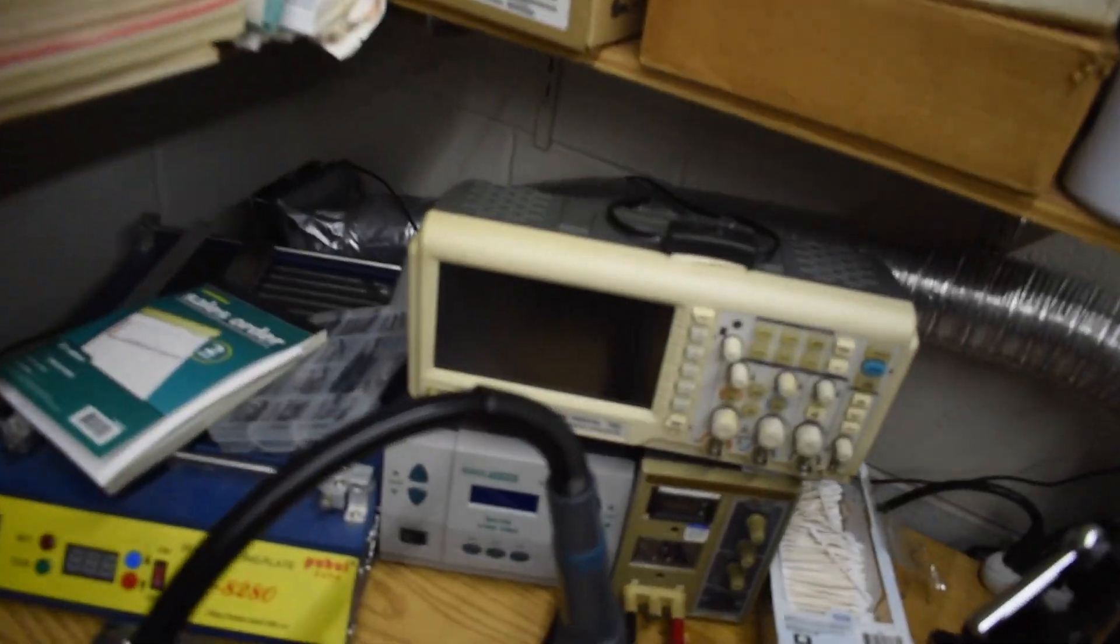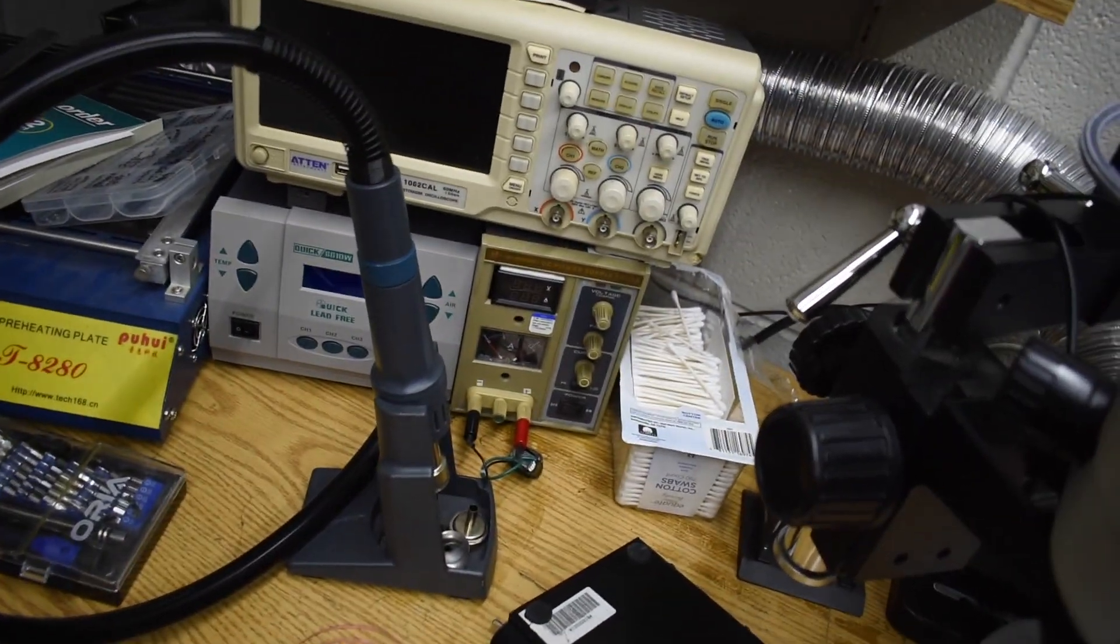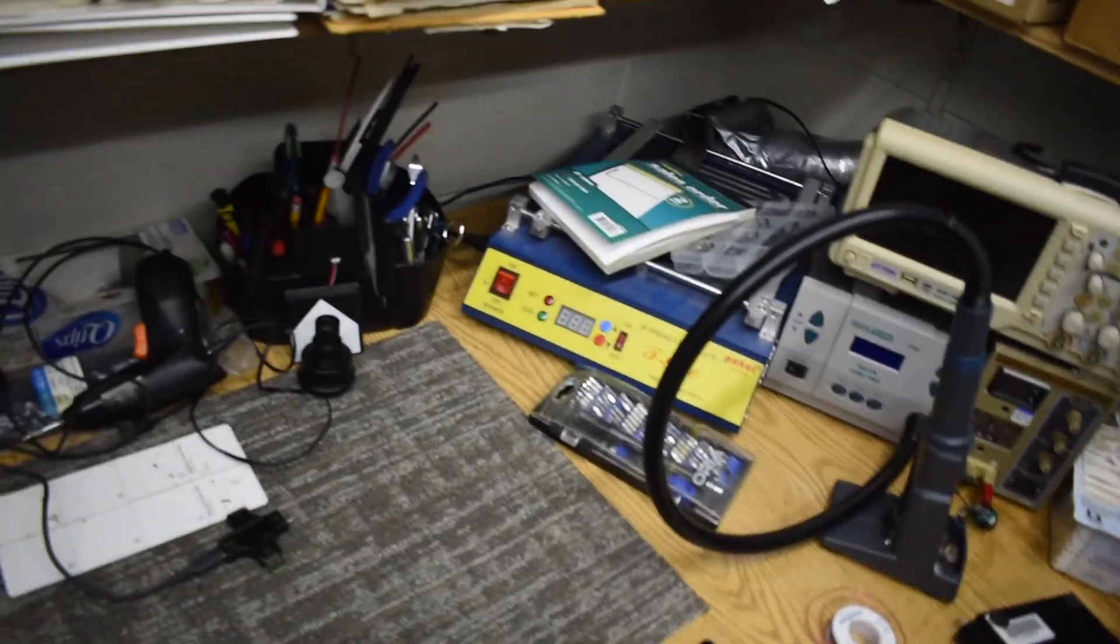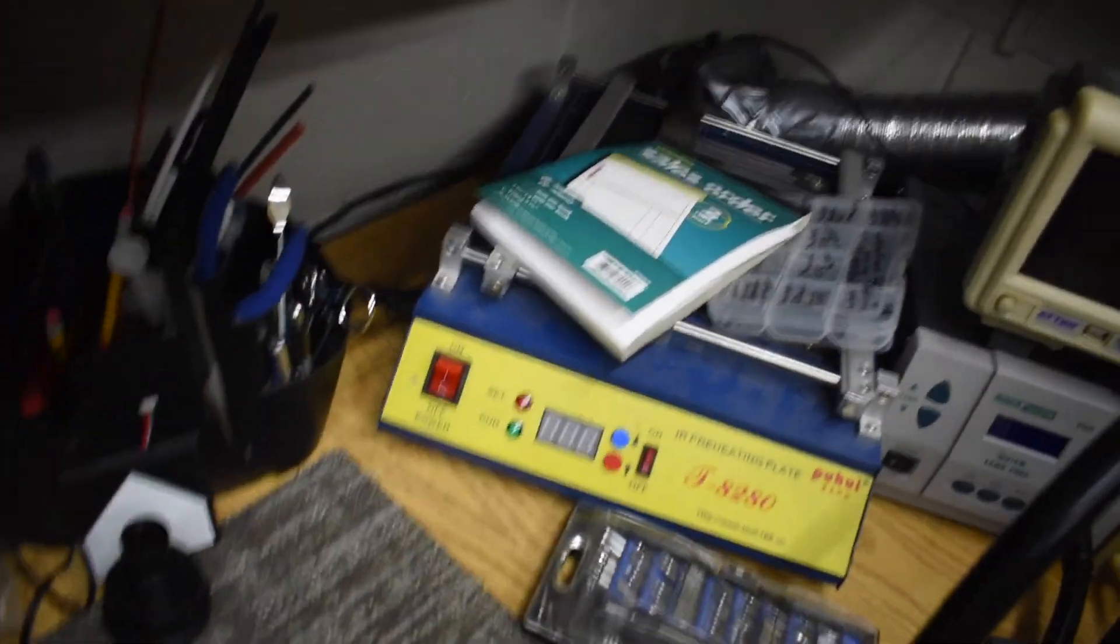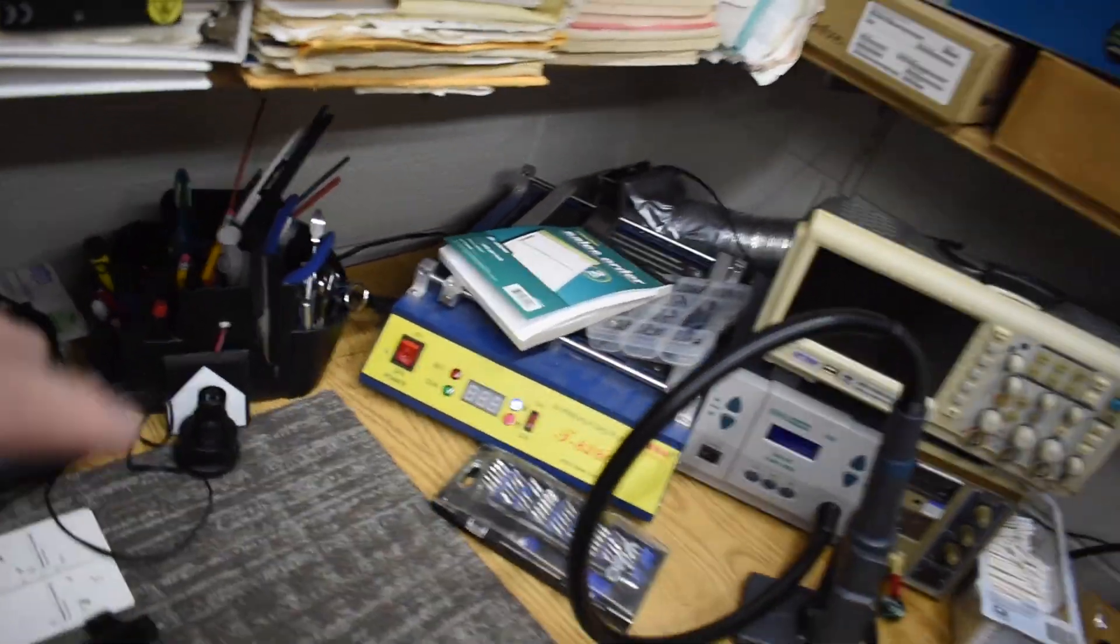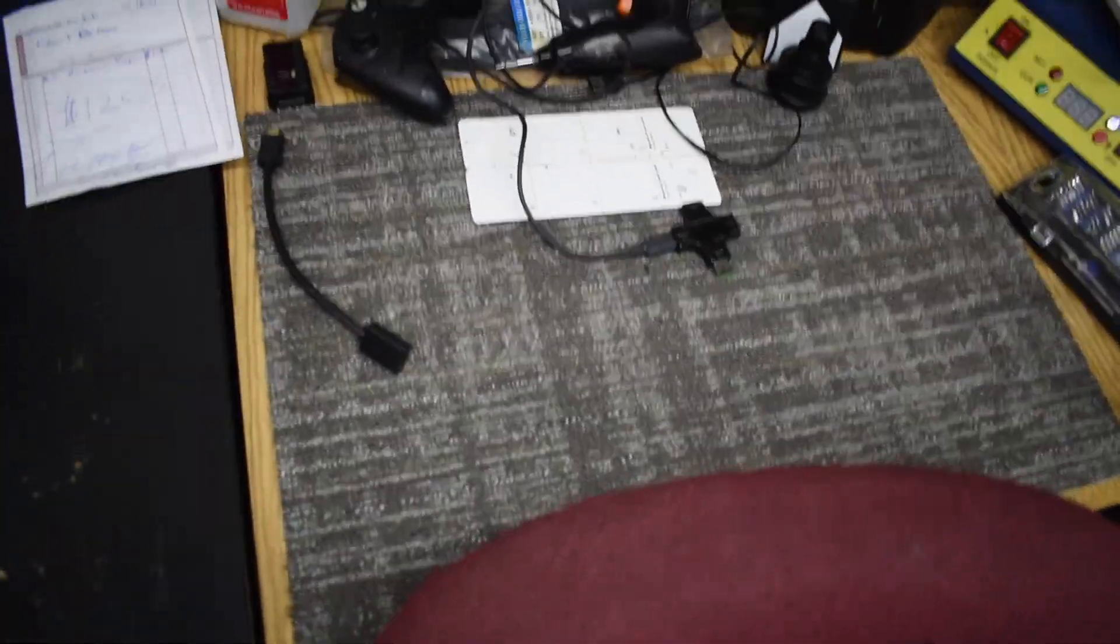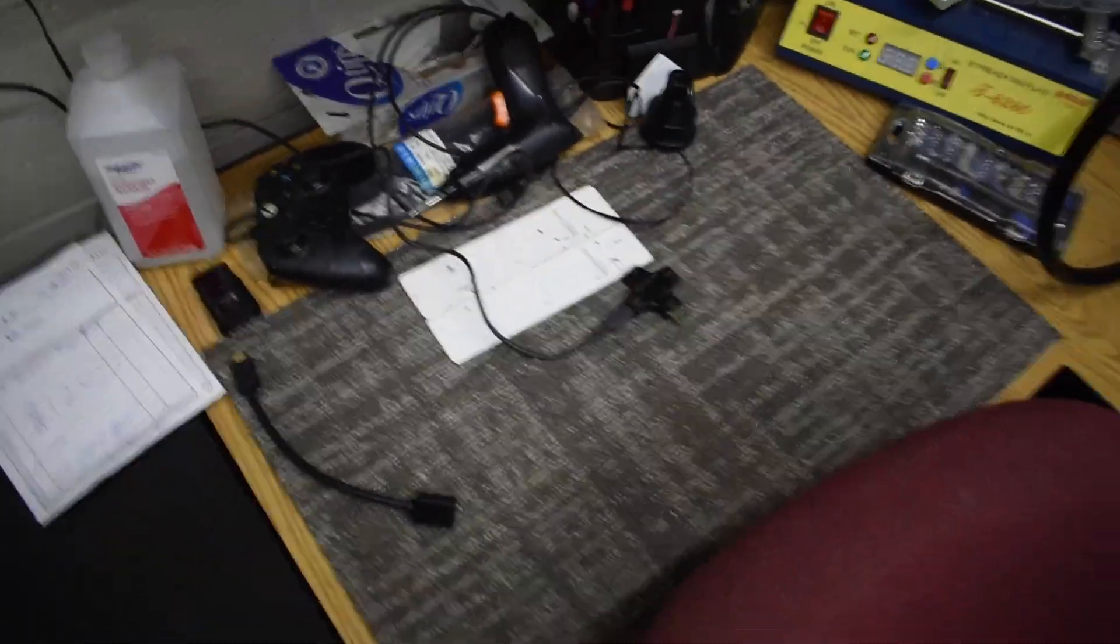Then got the oscilloscope there, the Quick station, the DC power supply. Of course I have my IR heating plate which has got stuff on it. It's plugged in but I don't usually use that too often. Of course we have some mats set up that are comfortable for working on stuff.